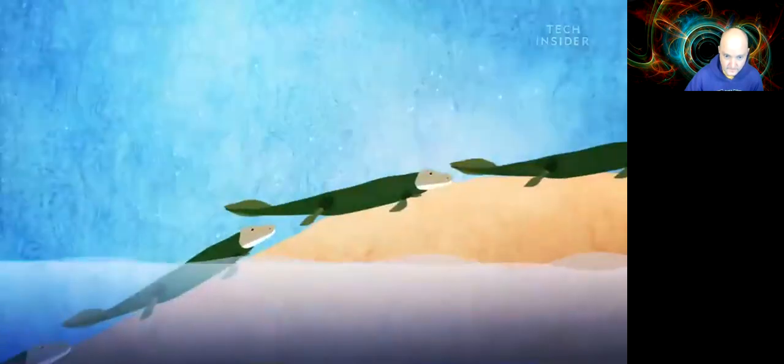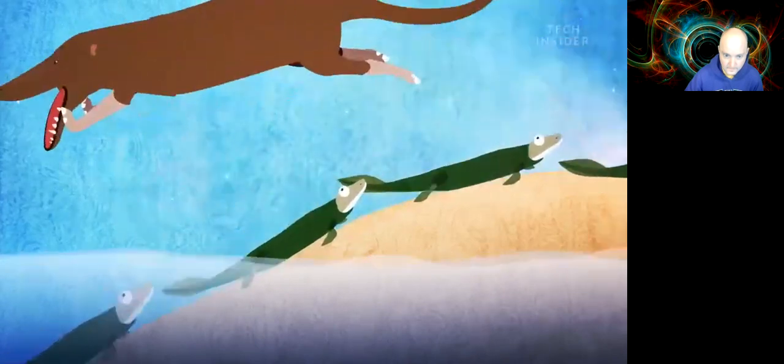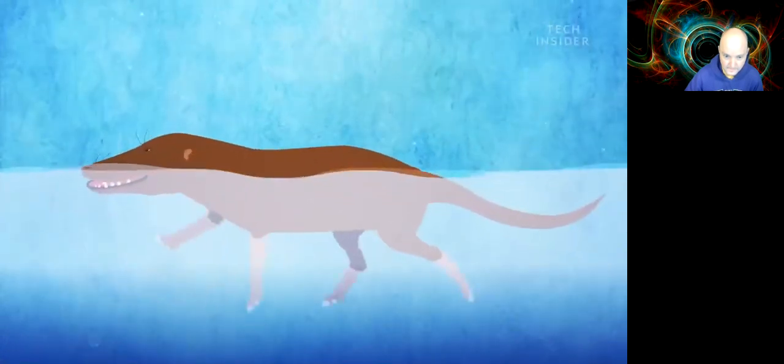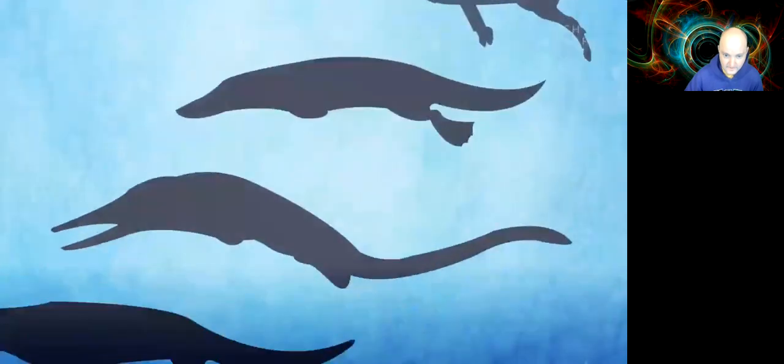Life on Earth spent millions of years clawing its way out of the oceans, but whales took all that effort and threw it out the window. From 50 to 40 million years ago, they traded in their four legs for flippers.